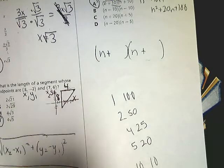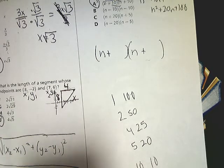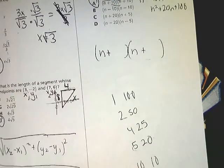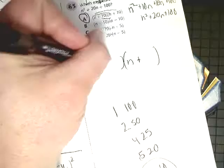Now, when I'm looking, when I have the same signs, be they negative or positive, I'm going to make sure that I'm adding those things together. So 5 and 20 gives me 25, so that's not going to be it. 4 and 25 gives me 29, so that's not going to be it. But 10 plus 10 does give me that 20.